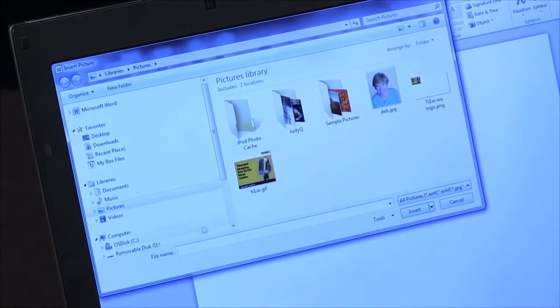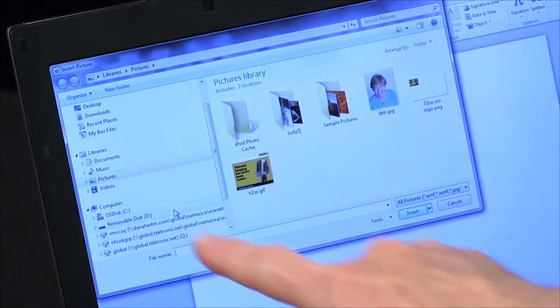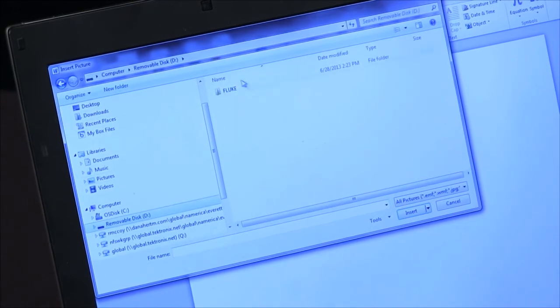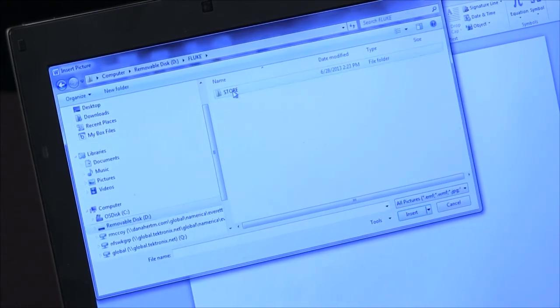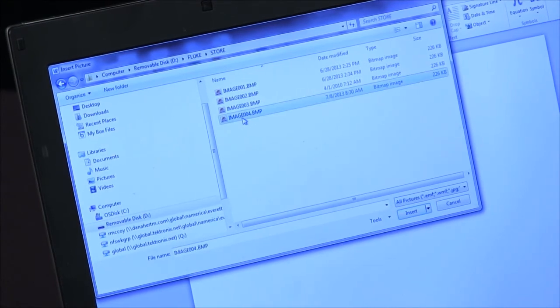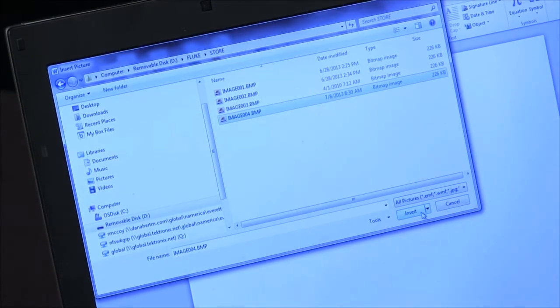Come down to my removable disk, go to the Fluke folder, and I can pull that bitmap image and say Insert.